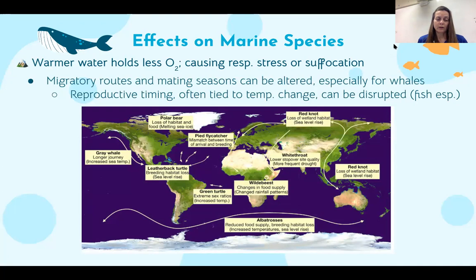Also, for many organisms that live in the ocean, their sex balance is determined by temperature when the eggs are hatched or incubated. This is leading to a disproportion in the sexes of these organisms.